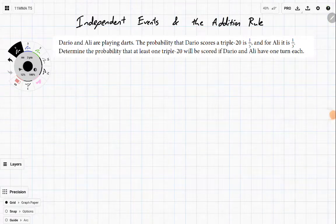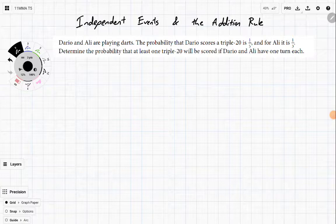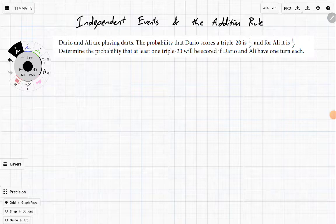All righty, so today we're going to be looking at independent events and the addition rule. So Dario and Ali are playing darts. The probability that Dario scores a triple 20 is a fifth, and for Ali it's a third. Determine the probability that at least one triple 20 will be scored if Dario and Ali have one turn each.